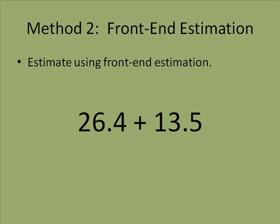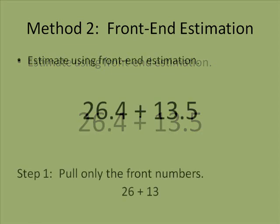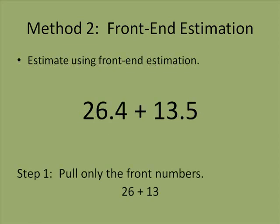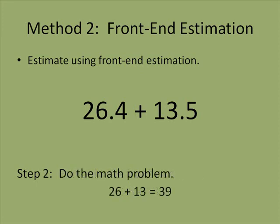26.4 plus 13.5. The only numbers I'm going to pull are going to be 26 and 13. I'm not even going to worry about the decimals. Now that I've pulled the numbers, I simply do the math. 26 plus 13 is 39.